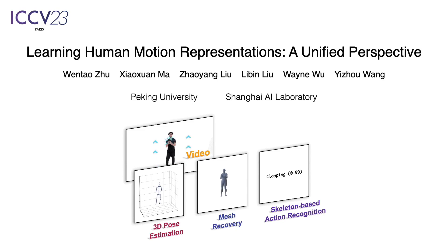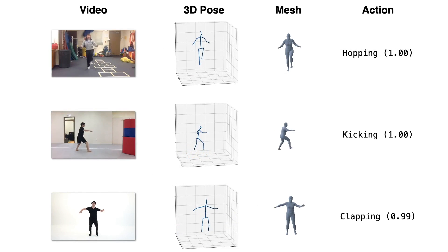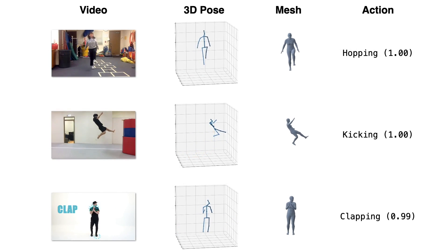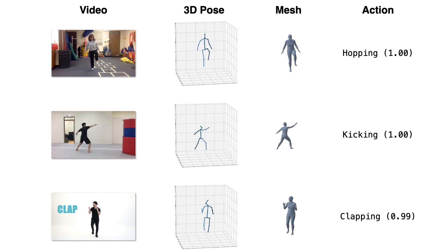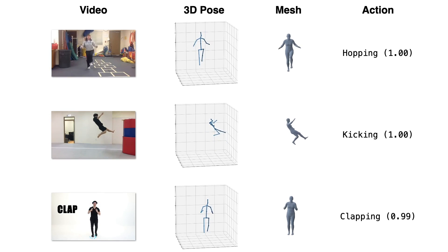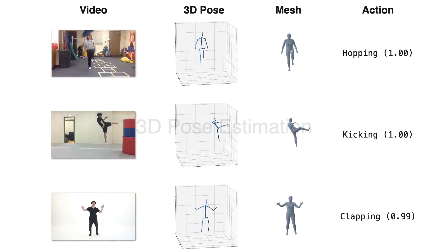We provide a new perspective on solving various human-centric video tasks through a shared framework of learning human motion representations. Our method learns human motion representations from large-scale and heterogeneous data sources, and can be applied to different downstream tasks, including 3D human pose estimation, action recognition, and mesh recovery. Here, we show some results on challenging internet videos.